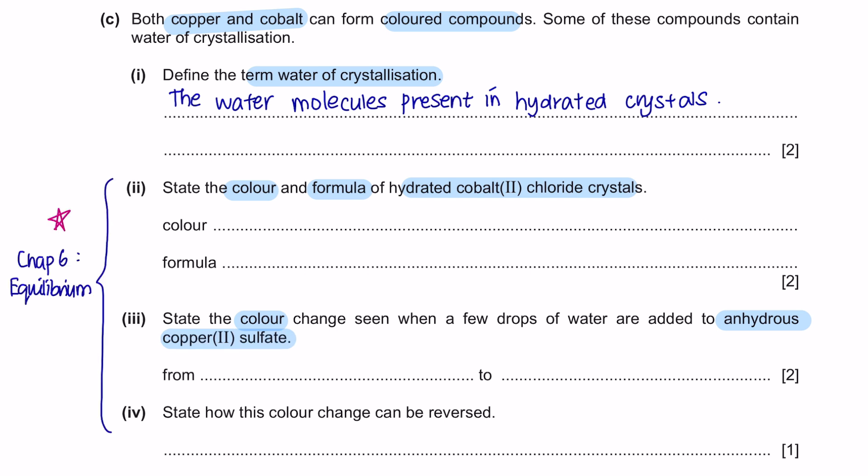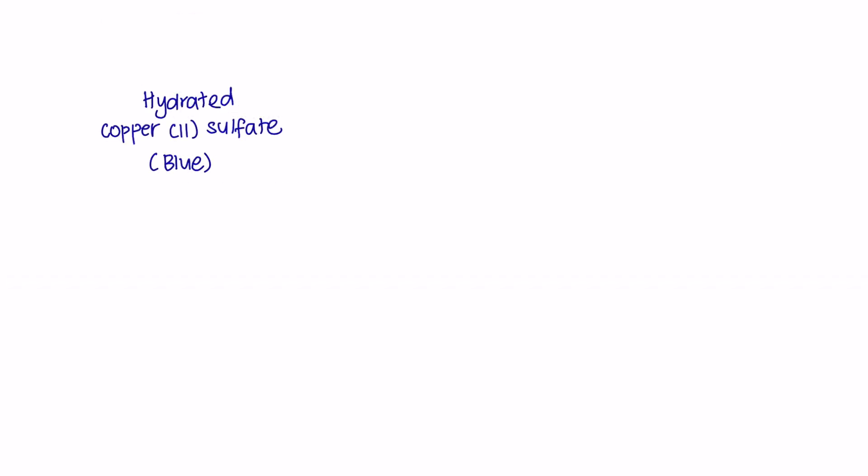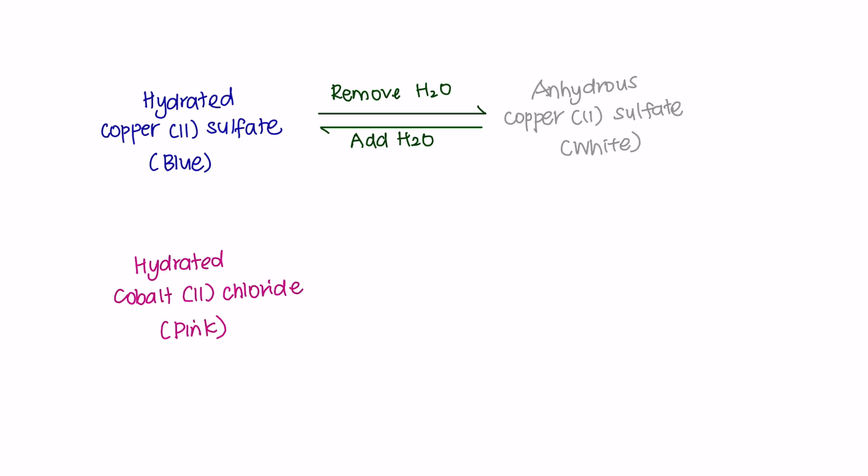For reversible reaction, you will come across examples of two crystals. The first one is cobalt chloride and the second is copper sulfate. Hydrated copper sulfate is in blue. When water is removed, it will form anhydrous copper sulfate which is in white. Hydrated means there is presence of water and anhydrous means there is no water present. This reaction is reversible. From white, we can turn it back into blue by adding water. The second crystal is hydrated cobalt chloride which is pink. When water is removed, it will form anhydrous cobalt chloride which is blue. Again, this reaction is reversible by adding water to get hydrated cobalt chloride. You can screenshot this and remember the color changes.